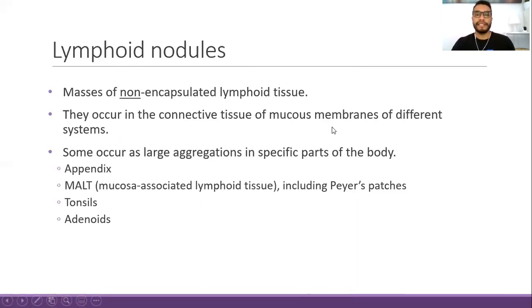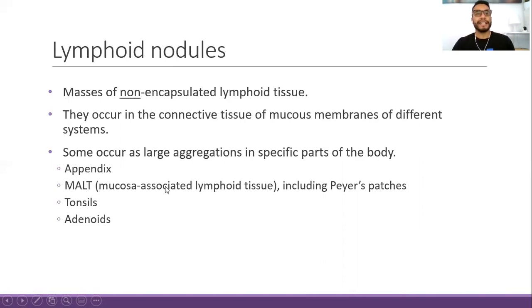Lymphoid nodules are found in different systems: the respiratory system, the digestive system, and the vagina as well. Some of them occur as large aggregations in specific parts of the body. Examples of these large aggregations include the appendix in the digestive system, and MALT — M-A-L-T — which stands for mucosa-associated lymphoid tissue. MALT is a general terminology for this mucosa-associated lymphoid tissue, and inside MALT we have different subtypes of classifications according to the type of mucosa.